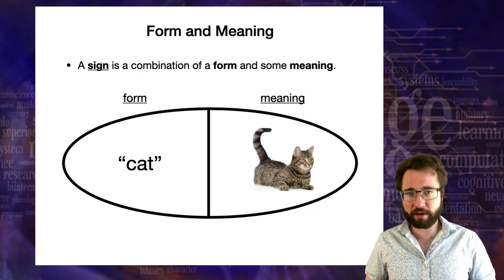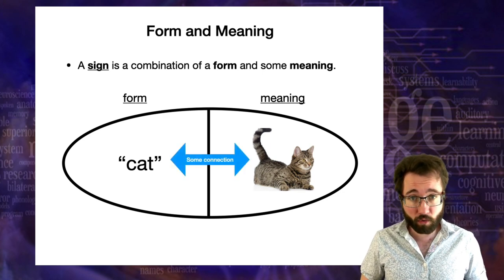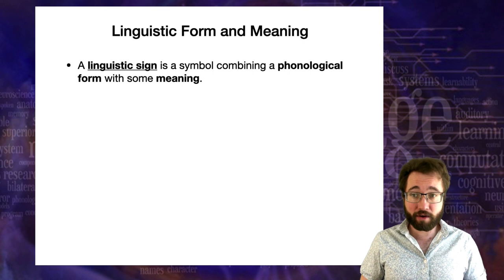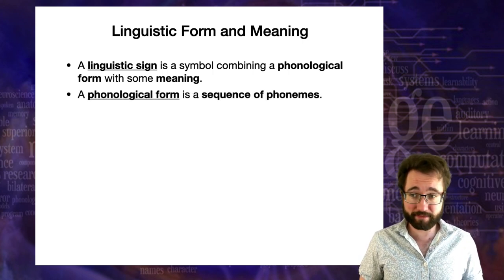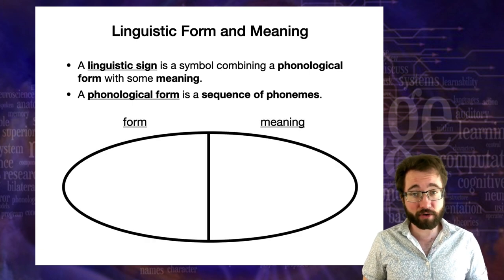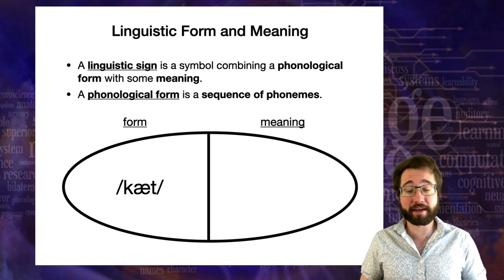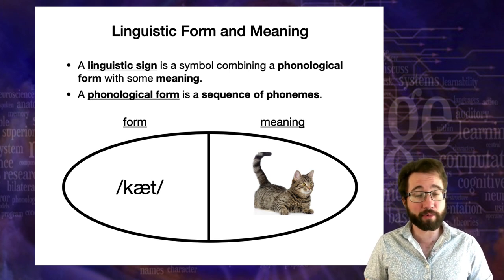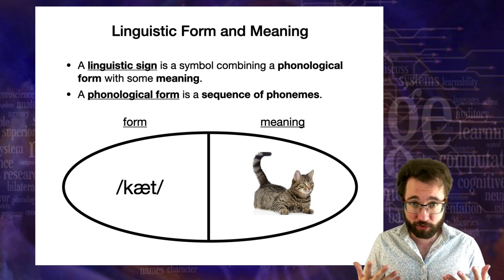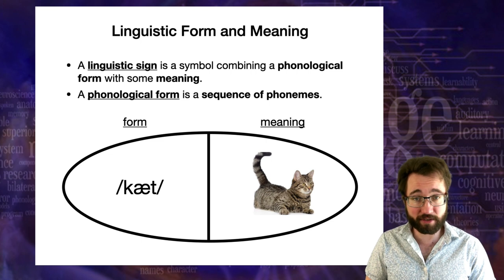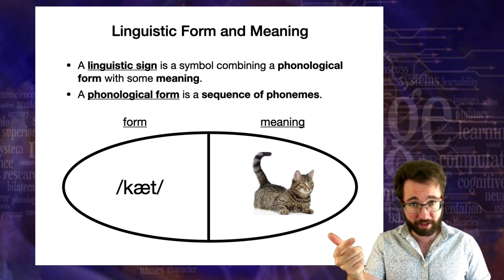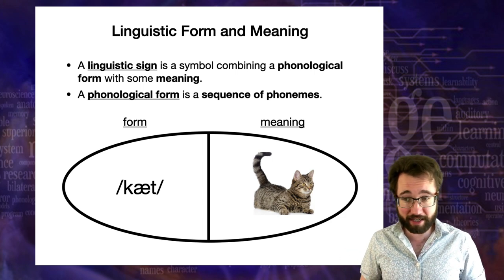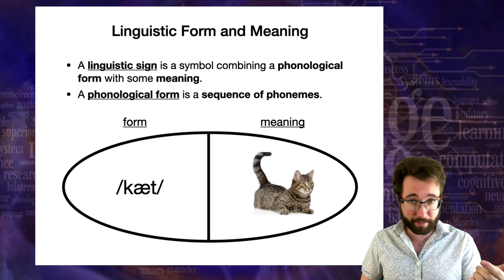Now that we've talked about phonology, we can refine this notion of form. We can talk about a linguistic sign, which is a special kind of sign that combines a phonological form with some meaning. A phonological form is just a sequence of phonemes. So a linguistic sign combines the phonemes k, æ, t with a meaning like 'this furry creature.' The association between form and meaning in most linguistic signs is symbolic — arbitrary convention of the English-speaking community.